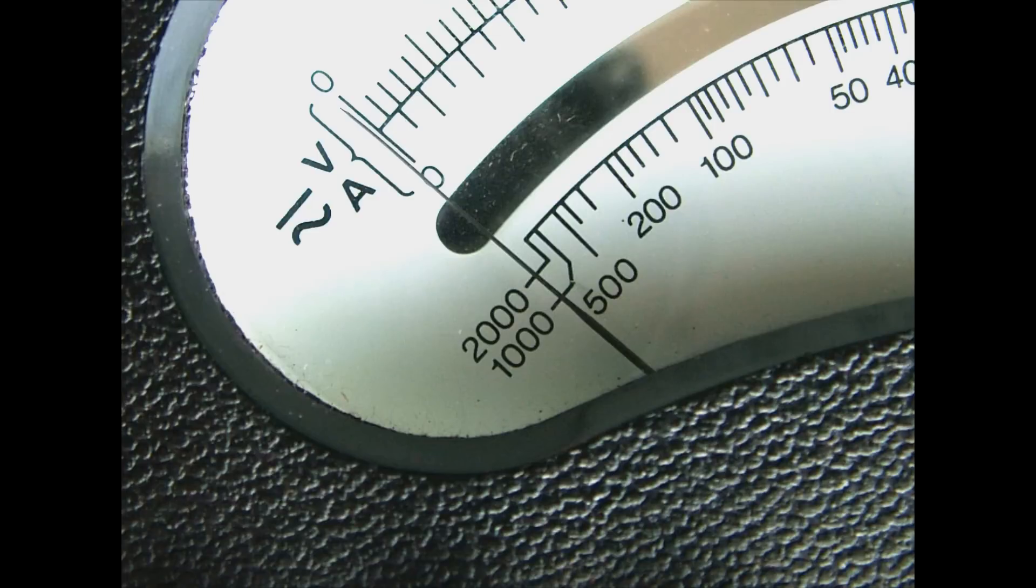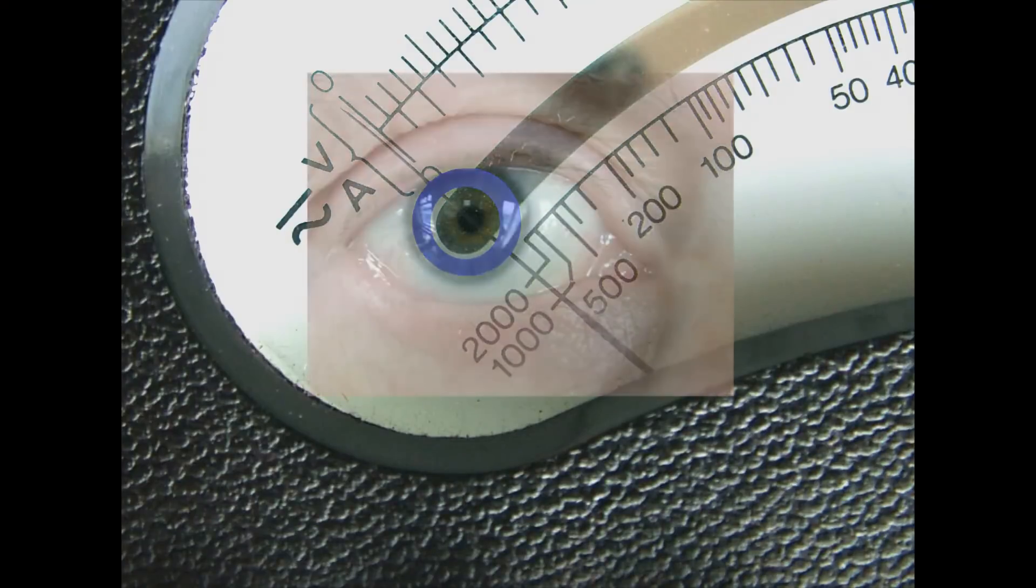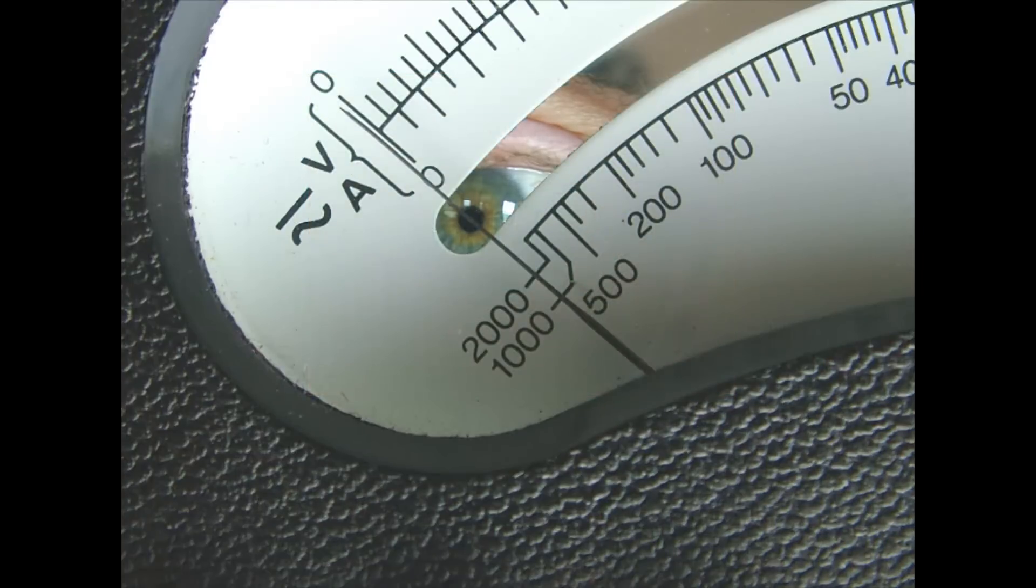Here I'm looking directly over the needle and you can see that the needle is definitely to the left of the zero reading. So I have the pupil of my eye lined up with this blue circle like this, and I'll just mark the pointer red to make it a little easier to see.